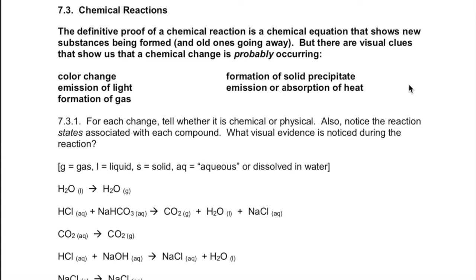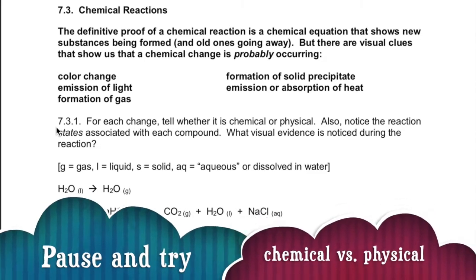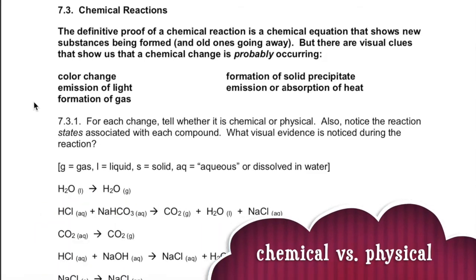We've talked before about chemical versus physical change. A chemical reaction is something that shows old substances going away and new substances being formed. We're going to be learning how to write and read chemical equations for chemical reactions. For each of the changes below, try to check whether you can see new substances being formed or whether it's just a physical change.